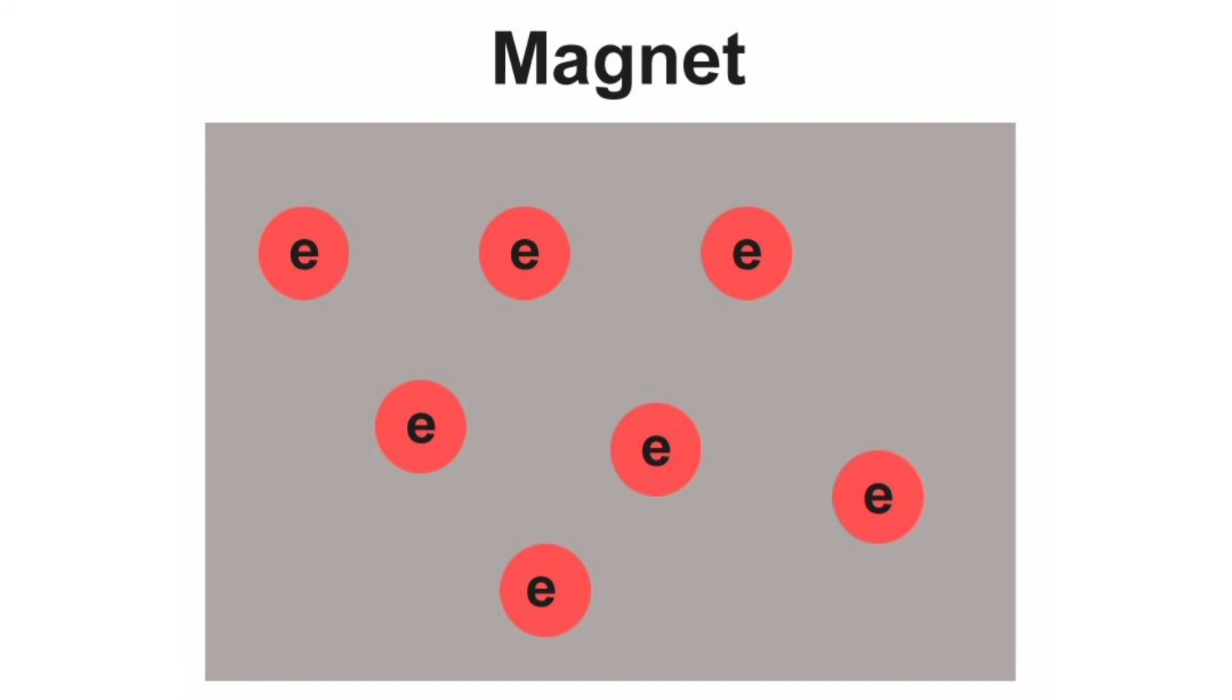Magnetic fields can affect light, even though electromagnetic radiation like light isn't charged, so a magnetic field shouldn't be able to change its direction.